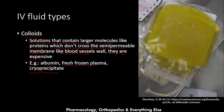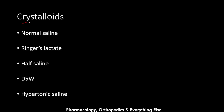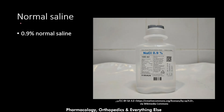However, colloids are expensive while crystalloids are pretty cheap and available everywhere. That is why crystalloids are used much more in fluid supplementation. Examples of crystalloids are normal saline, Ringer's lactate, half saline, dextrose 5% in water, and hypertonic saline, which we will explain in the next slides.